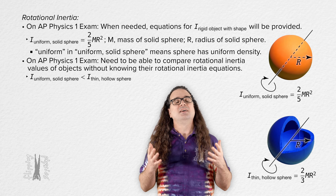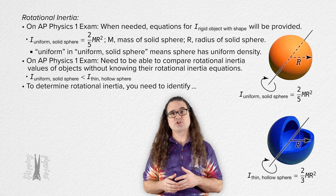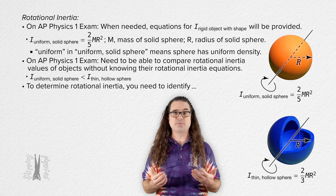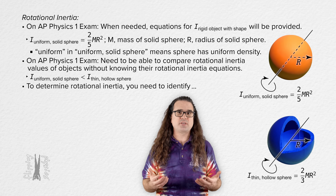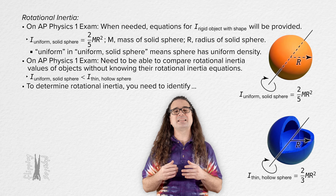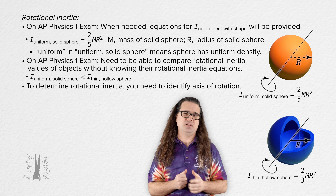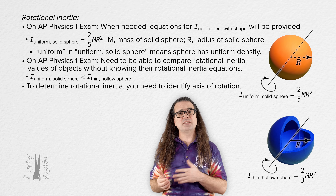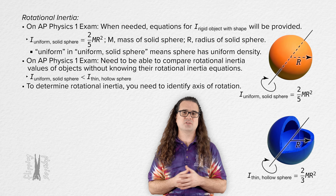In order to determine the rotational inertia of anything — a particle, a system of particles, a rigid object with shape — you need to first identify the axis of rotation. Please be careful of that. Without defining an axis of rotation of a system, you cannot determine a system's rotational inertia.